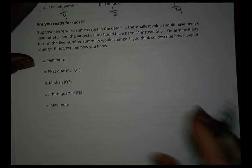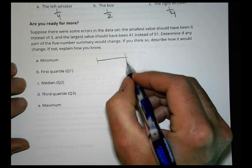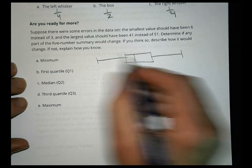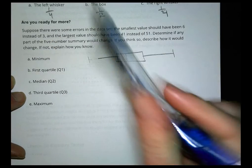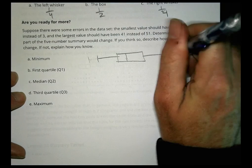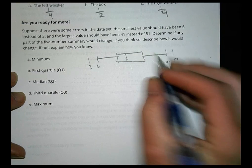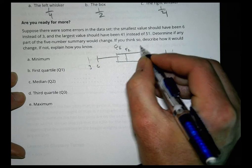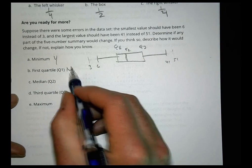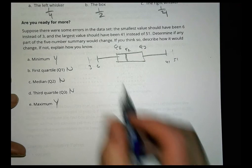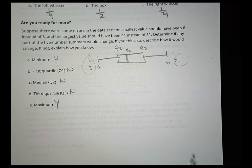Now, suppose there were some errors in the data set, and the smallest value should have been six instead of three, and the largest value should have been 41 instead of 51. If I had to change the data set, and that should be six instead of three, what am I changing? I'm going to change my whisker a little bit. If it wasn't quite out to 51, it was 41, then I'm going to bring my whisker in like this. These quartiles here, nothing changed, did it? So the minimum, am I going to change that? Yes. First quartile? No. Median? No. Third? No. Maximum? Yes. So if I change those two end points like that, nothing else changes about the box plot except the end points.